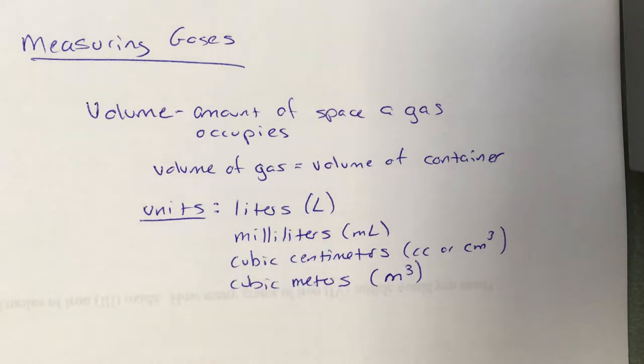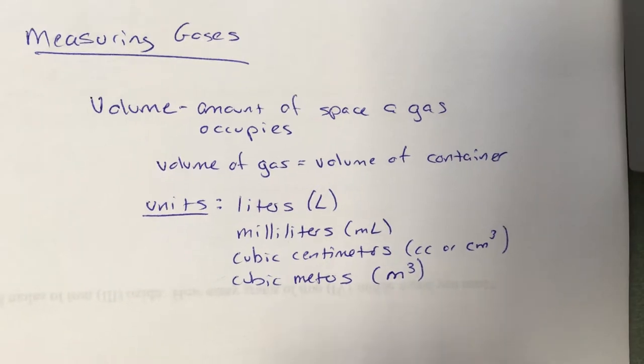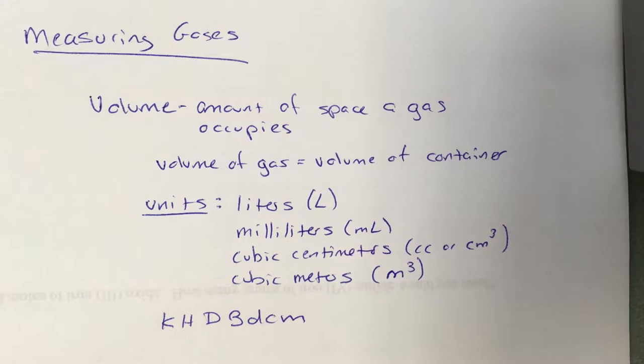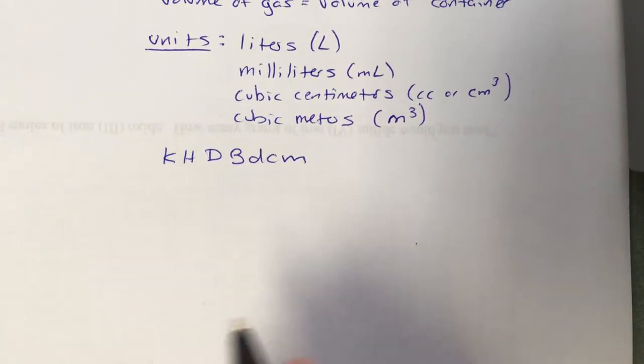The one you use depends on the situation. If you are bubbling a gas into a flask and trying to measure how much gas is bubbled into it, it's probably going to be in liters or milliliters depending on the size of the flask. If we're trying to talk about the volume of a gas in a classroom, you would have to measure the length, width, and height of the classroom and calculate its volume, and those calculated volumes end up being in these cubed length units like cubic meters.